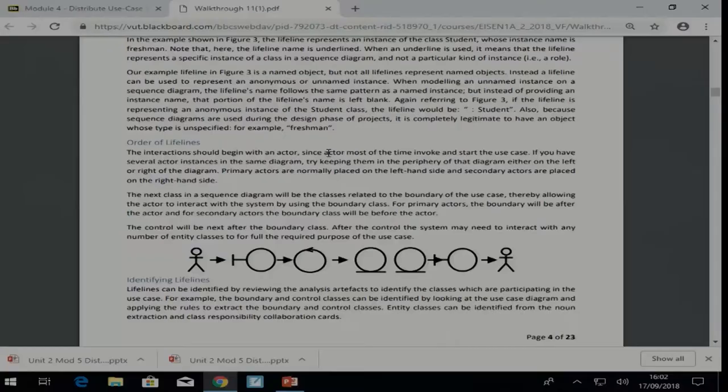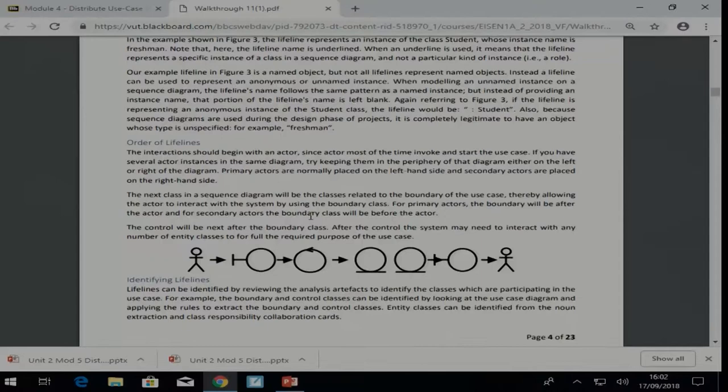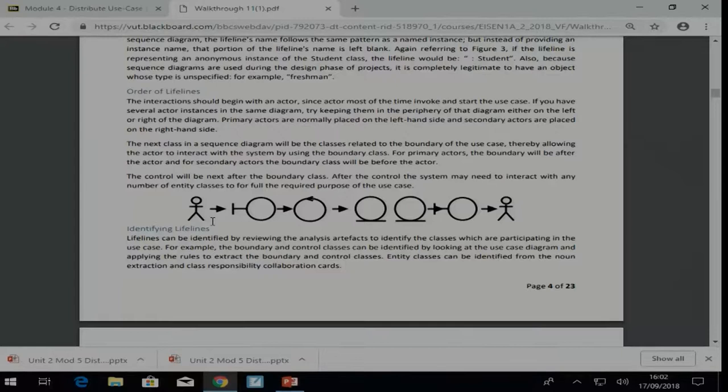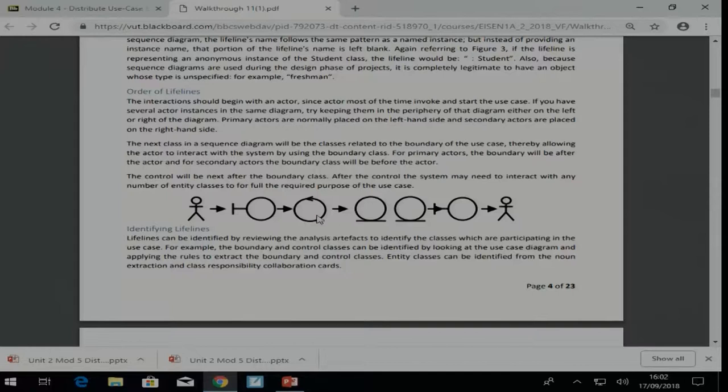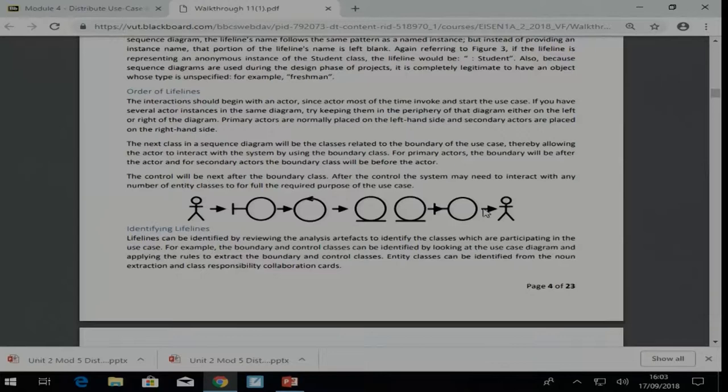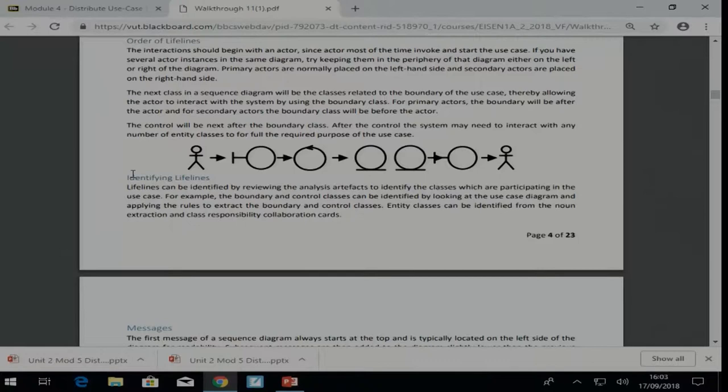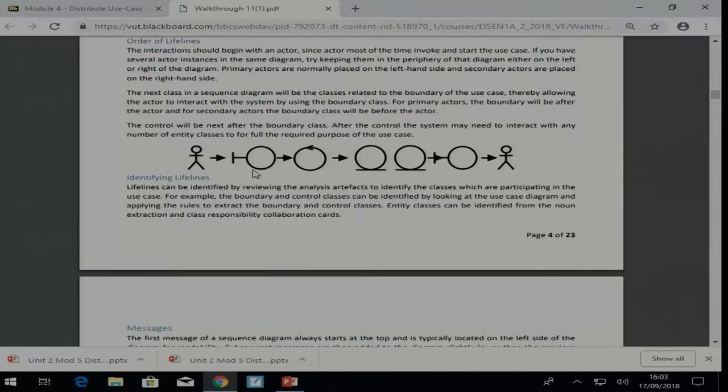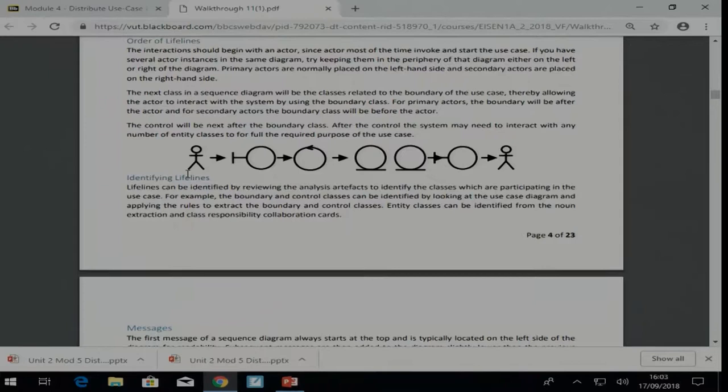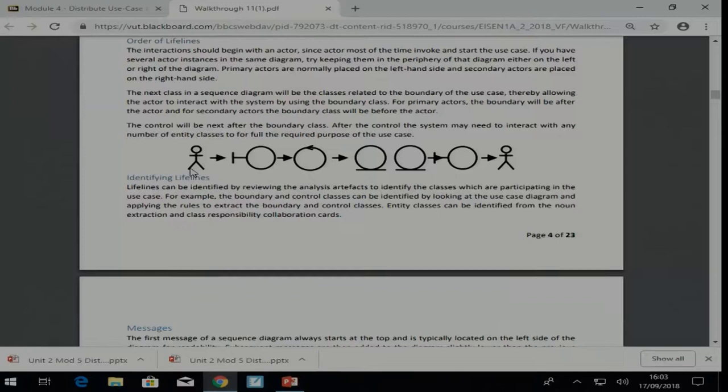So the order of our lifelines: it will normally be the actor, then your boundary class, control class, any number of entity classes, then there may be another boundary class and your actor. Now what you need to note is that your entity class won't directly go back to your actor. How is he going to go to the actor? He's going to firstly go back to the controller, and then from there to the boundary class. None of them will directly communicate with the actor. Have you ever been electrocuted by a system when it wants to talk to you? It would be a very badly designed system.